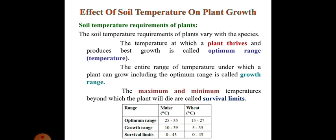The table shows the different ranges: optimum range, growth range and survival limits. And there are two crops, maize and wheat. In optimum range, the temperature required in maize is 25 to 35 and in wheat 15 to 27. In the growth range, the temperature required in maize is 10 to 39 and in wheat 5 to 35. In the survival limits, the temperature required in maize is 0 to 43 and in wheat is also 0 to 43.